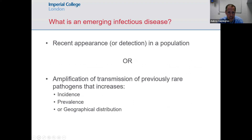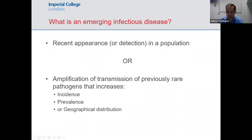So a definition to start with: what is an emerging infectious disease? We're talking here about the recent appearance or detection of a disease in a population, or the amplification of transmission of a previously rare pathogen that either increases its incidence, prevalence, or geographical distribution.